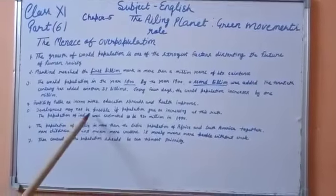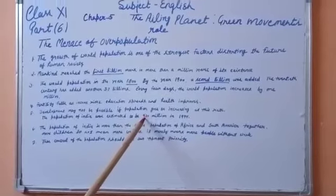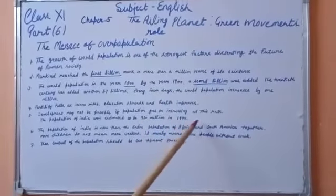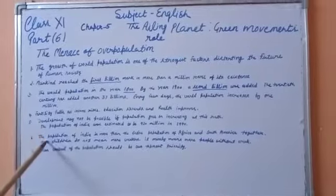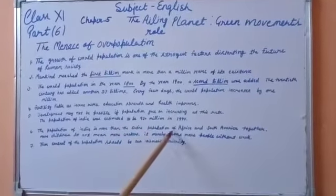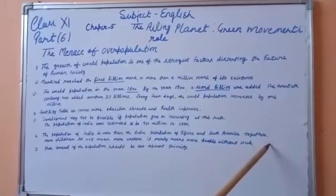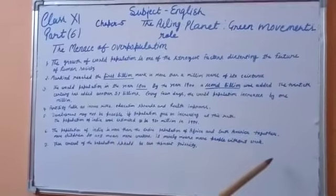The population of India was estimated to be 900 million in 1994, and the population of India is more than the entire population of Africa and South America together. And it's very surprising.